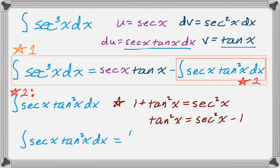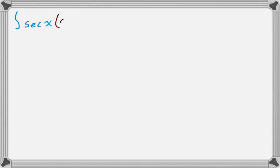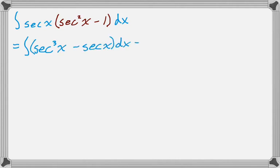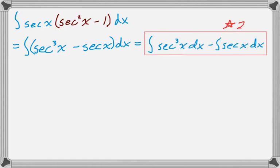So I have that this integral equals secant of x times the quantity secant squared minus one. So we have this, and I'm going to distribute, get the integral of secant cubed minus secant of x dx, and then break that into two integrals. And notice that the integral of secant cubed showed up again, and sometimes that's good. So that's number two from back before.